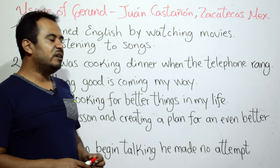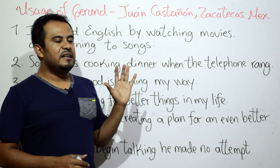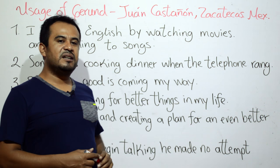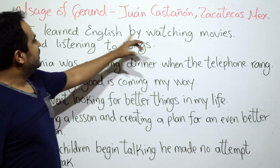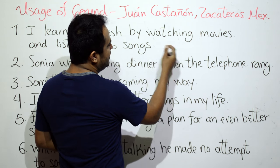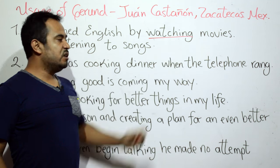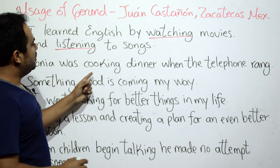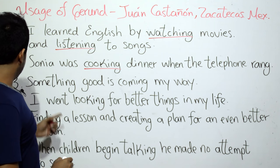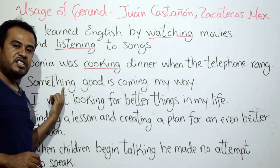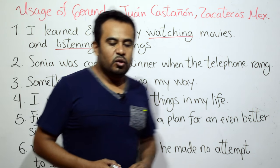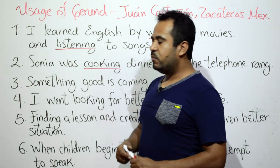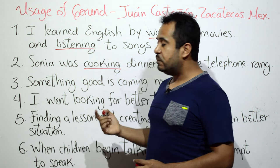Vamos primeramente a localizar los gerundios. Gerundio es cualquier verbo con terminación ING en inglés — the ING form. Entonces aquí tenemos 'watching' — aquí tenemos el gerundio. Después tenemos 'listening', que es escuchando. 'Cooking', cocinando. Hay palabras que terminan en ING pero que no son verbos, por lo tanto no son gerundios — simplemente son sustantivos o adjetivos.